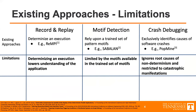However, these methods have weaknesses. In record and replay, you've determinized an execution, which is the point, but you've lowered your understanding of the application. If you have a simulation with a high dimensionality of input, the recorded execution is for one input set — so in the end, you only understand one input. If a user uses a different input, it could fail in a different way, or the bug was never actually fixed. In motif detection, you're limited by existing knowledge — if a new bug happens outside of your train set of motifs, you have to spend months getting that new motif understood. And in crash debugging, you ignore the root cause of non-determinism, just fix the last mile, and you're restricted to catastrophic manifestations.